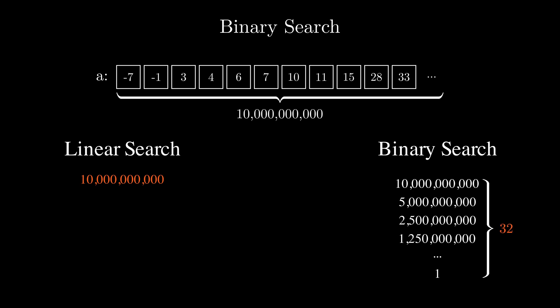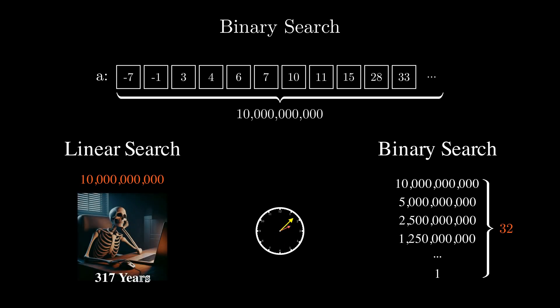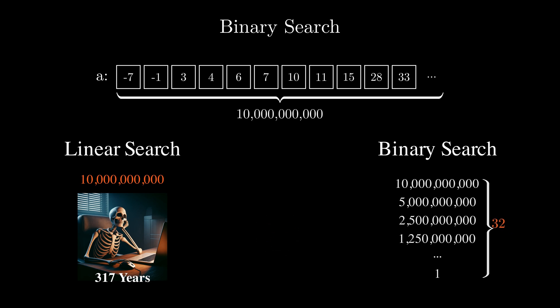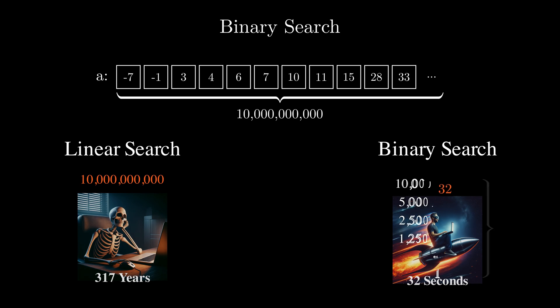To make a real-life comparison, imagine that comparing an array element to our query number takes one second. That way, if we loop through the whole array and perform 10 billion operations, it would take about 317 years to complete the search. But with binary search, it would be just 32 seconds. And that's a huge difference in speed.